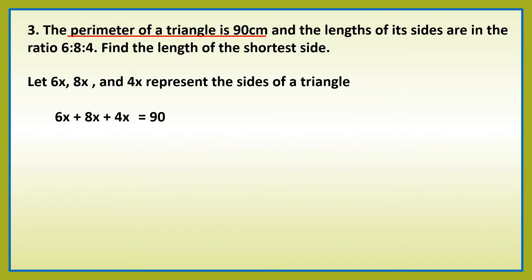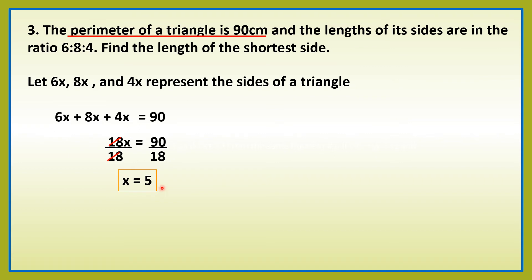Kasi that is the perimeter of the triangle. Then simplify natin: 6x plus 8x plus 4x that is equal to 18x. Just copy 90. Then divide both sides by 18 to solve for x. Cancel out 18. Therefore, x is equal to 5. Since meron na tayong x, pwede na natin kuhanin ang measures ng sides ng triangle.